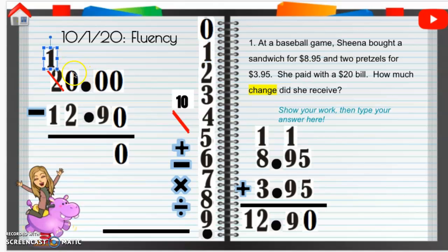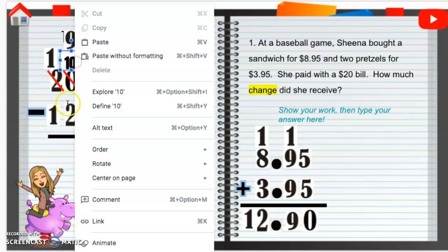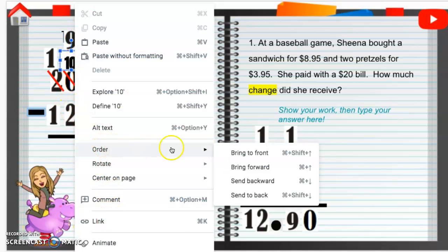That makes this 0 able to be a 10. Maybe not. There you go. Now, that 10, we finally can borrow from that 10 to make that 10 a 9. Let me send that to the back. Let me send that to the back.